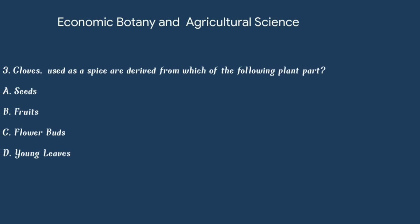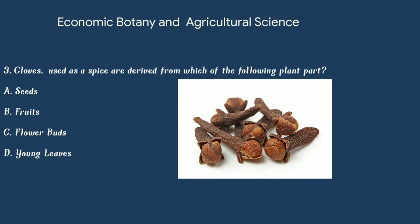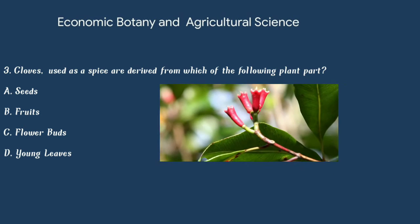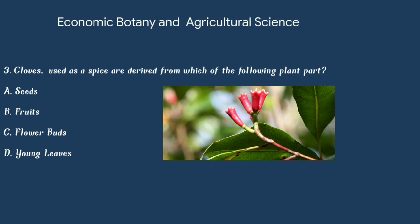Question number 3. Cloves used as a spice are derived from which of the following plant parts? Option A: Seeds. Option B: Fruits. Option C: Flower buds. Or option D: Young leaves. The answer is option C: Flower buds.